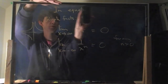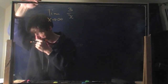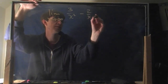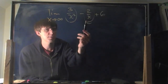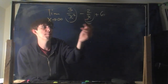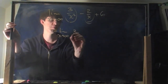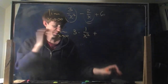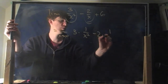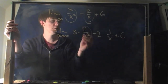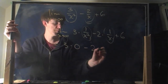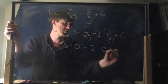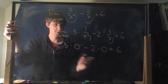For example: the limit as x goes to infinity of (3/x² minus 2/x plus 6). You can rewrite this as 3 times (1/x²) minus 2 times (1/x) plus 6. The limits of the first two terms are both zero. So you get 3 times 0 minus 2 times 0 plus 6. The answer is 6.